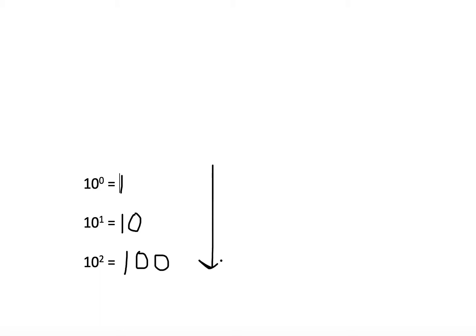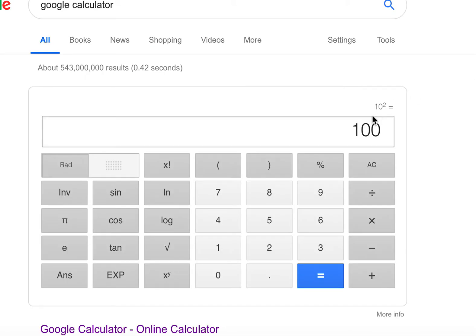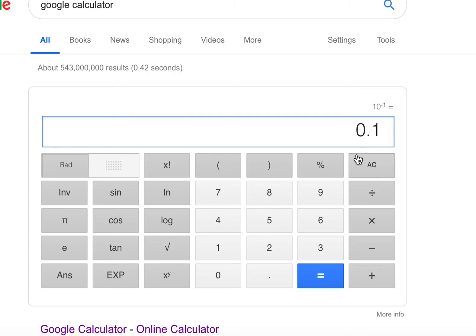Notice that exponents so far are either zero or positive numbers, indicating an increase in size. What if we have negative numbers? Let's check 10 to the power minus 1. I go to the Google calculator, hit all clear, type in 10, hit X to the Y, then the minus key and 1, and hit enter. The answer is 0.1.